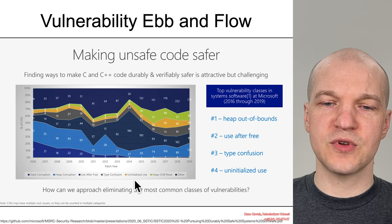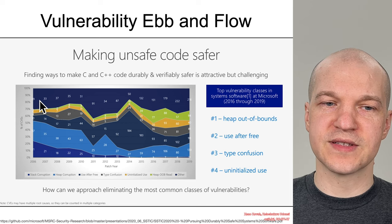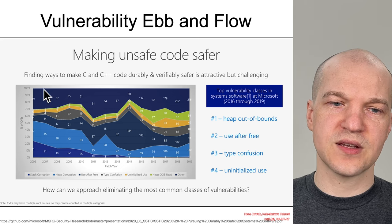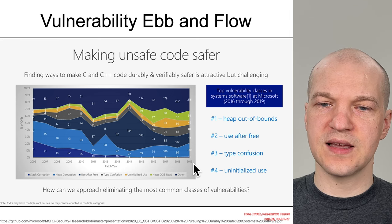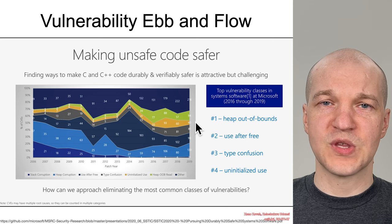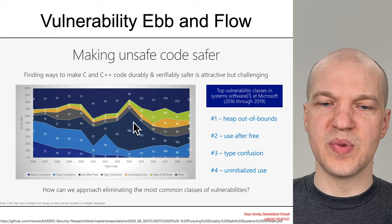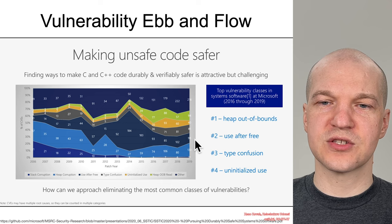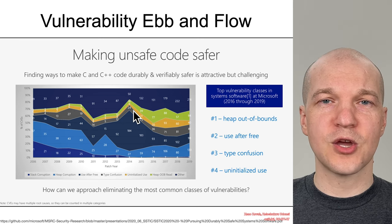The way to read this chart: the bottom color is stack corruption, next is heap corruption, then use-after-free, type confusion, uninitialized use, heap out-of-bounds, out-of-bounds read, and other. The total count adds up to different numbers over time — around 150 or so in earlier years, growing to around 670 in 2019. Stack overflows decreased to almost nothing over time, and there was a big batch of use-after-free vulnerabilities around 2014. These are exactly the types of vulnerabilities you will learn about in this class or in the 1002 class.